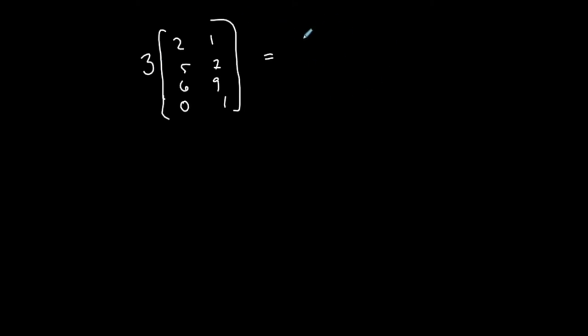So the result should also be a 4 by 2 matrix. 3 times 2 is 6, 3 times 5 is 15, 3 times 6 is 18, 3 times 0 is 0, 3 times 1 is 3, 3 times 7 is 21, 3 times 9 is 27, 3 times 1 is 3.